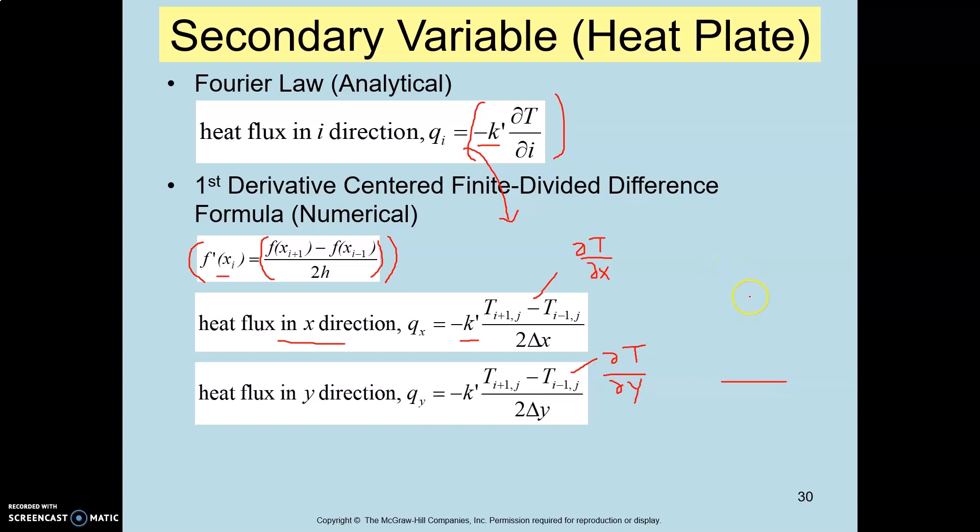One is in X direction and another one is in Y direction. Imagine that you have a point here. At this point, this is your i data, so to compute the dT/dx at this point you need the information at i plus 1.